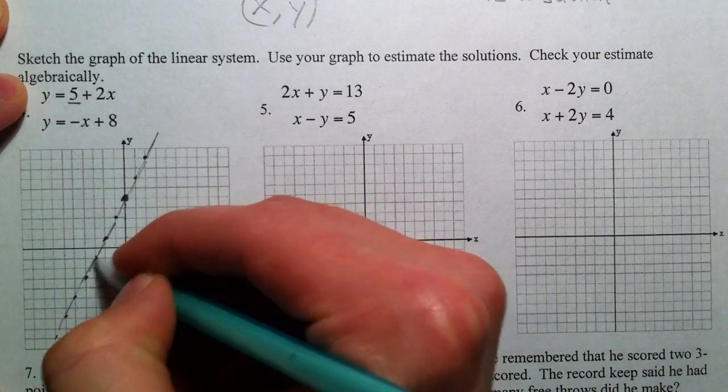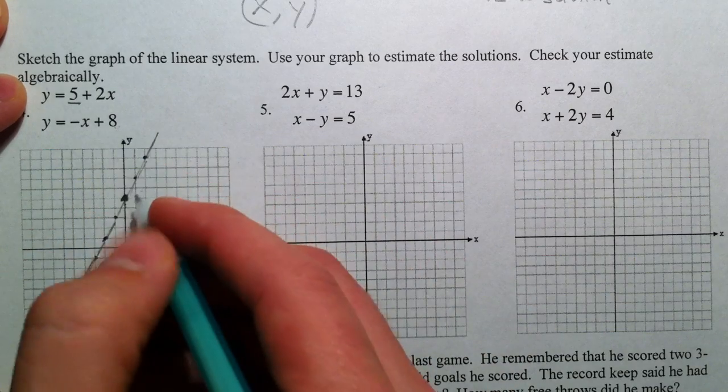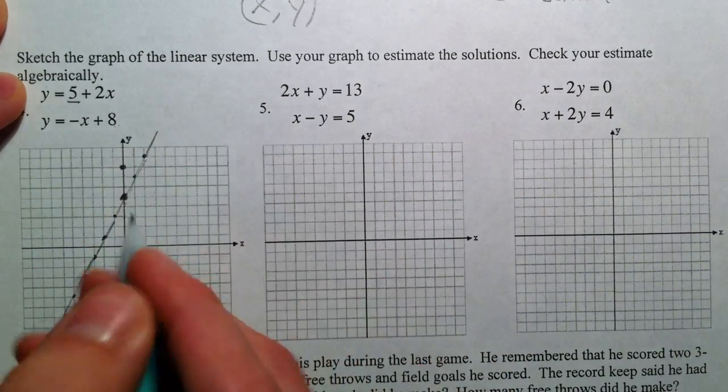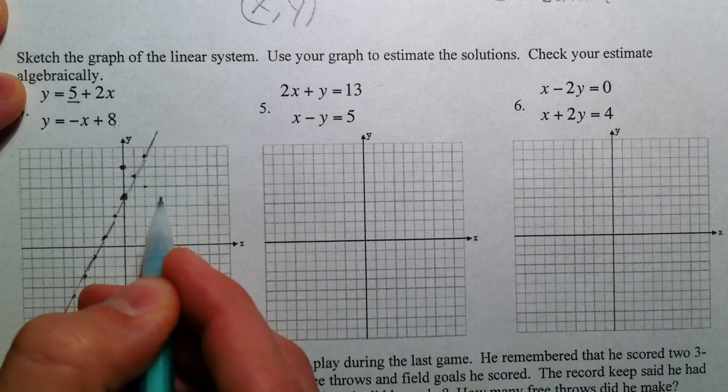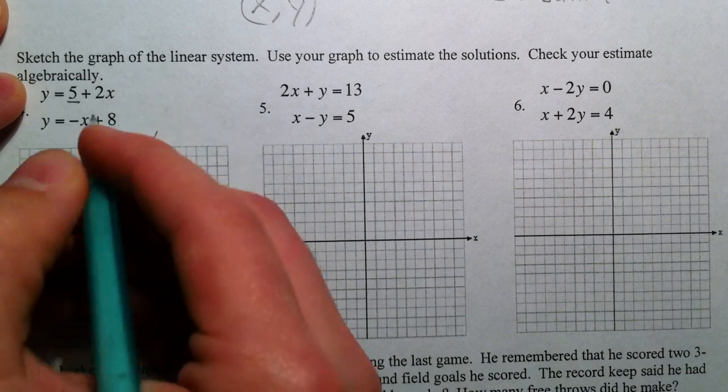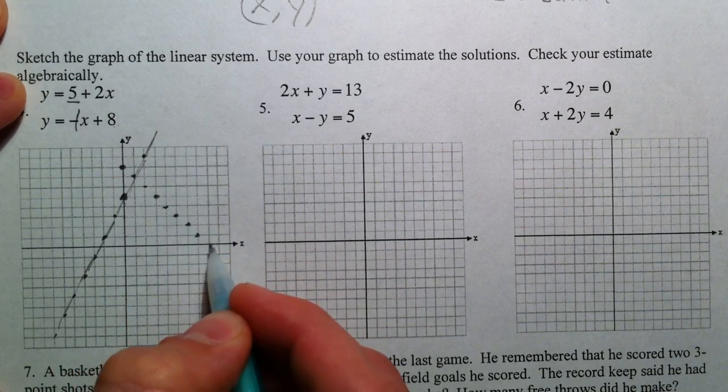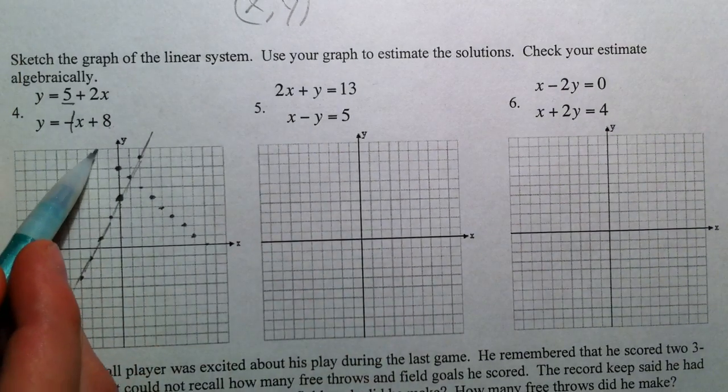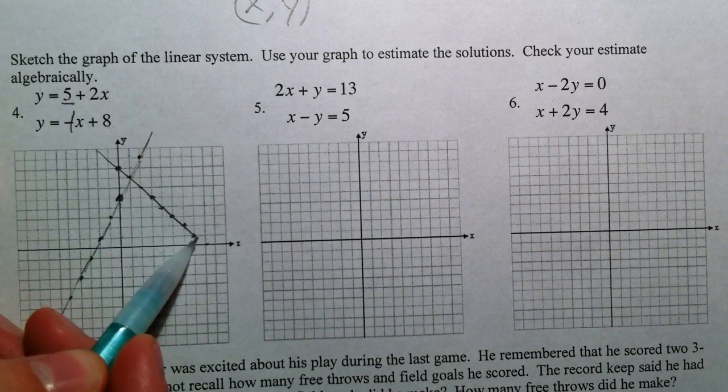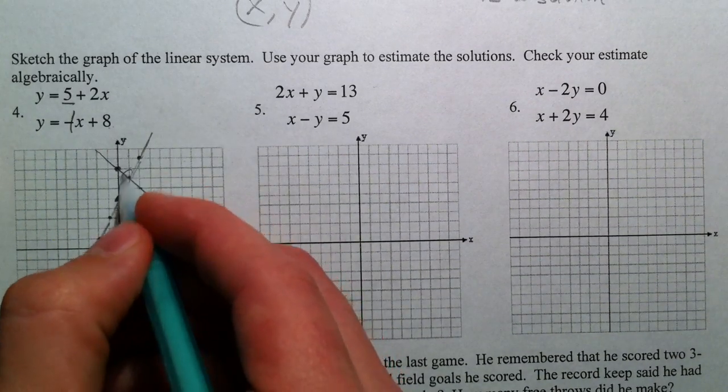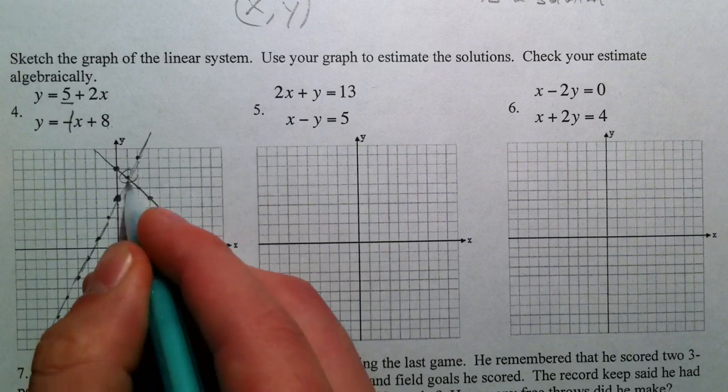And then the other one has a y-intercept of 8, so 6, 7, 8. And the slope is negative 1, down 1 over 1. Remember there's no number in front of the x, right? And so you can already see where that point of intersection is going to be. And we just need to name it: 1, 7.